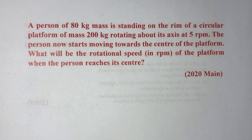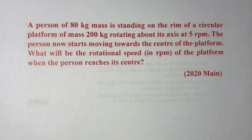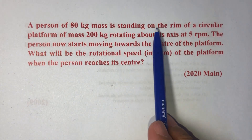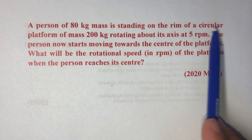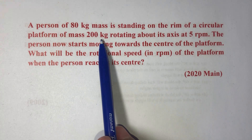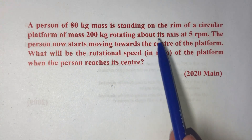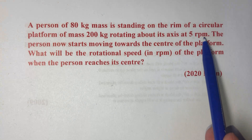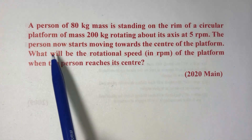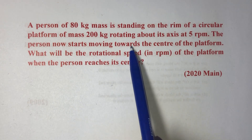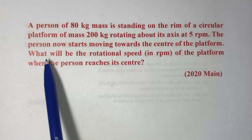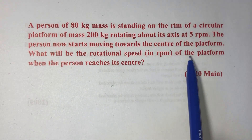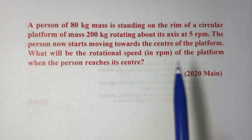Hello friends. In today's question, a person of 80 kg mass is standing on the rim of a circular platform of mass 200 kg rotating about its axis at 5 revolutions per minute. The person now starts moving towards the center of the platform. What will be the rotational speed in RPM of the platform when the person reaches the center?